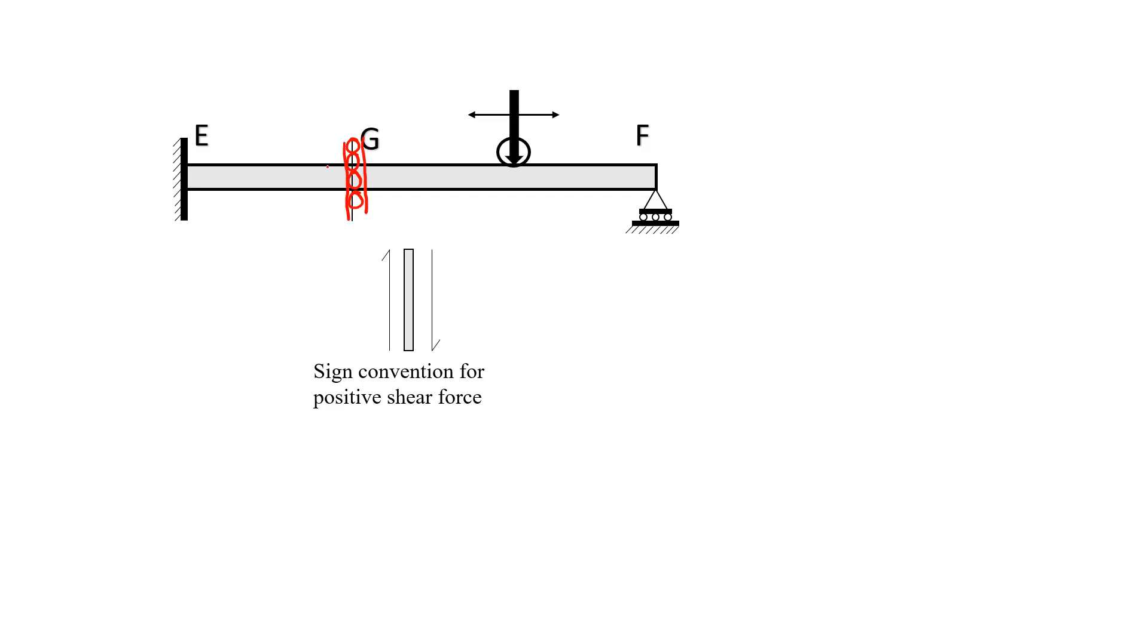Now giving a positive displacement to it at that particular section. As the end of the beam E is fixed, it will bend like a curve. The curve is allowed in an indeterminate structure.